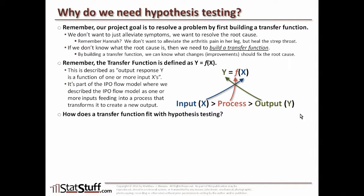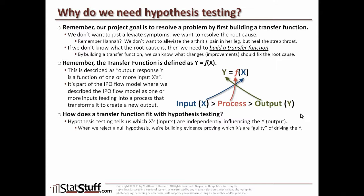How does the transfer function fit with hypothesis testing? Hypothesis testing tells us which of those x inputs are independently influencing the y output metric. When we reject a null hypothesis, we're building evidence proving which x's are guilty of driving the y. At the end we compile all the evidence in the improve phase to fix those root causes — the most critical x's that have the most influence on our output y.